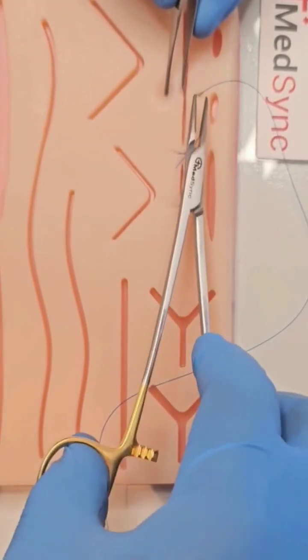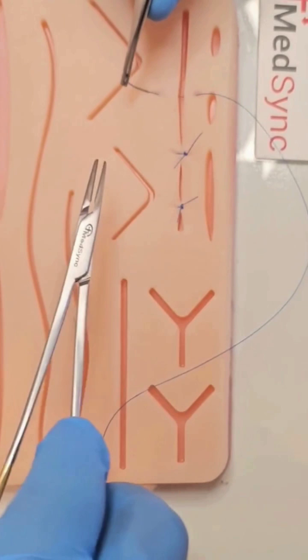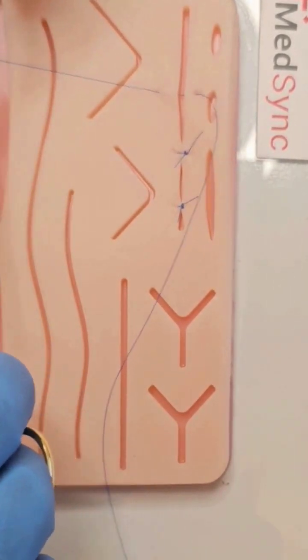Enter at 90 degrees, pull the suture through. Lay the needle holder between the long and the short ends of suture.